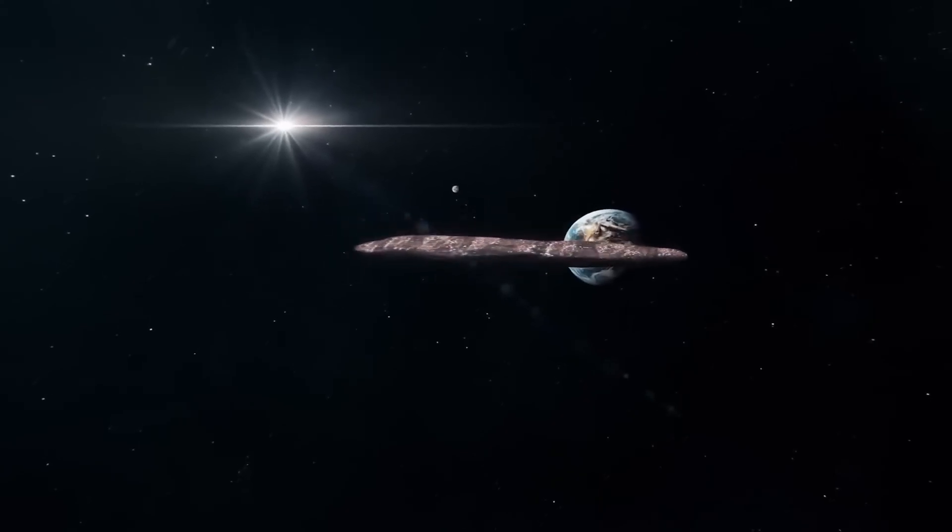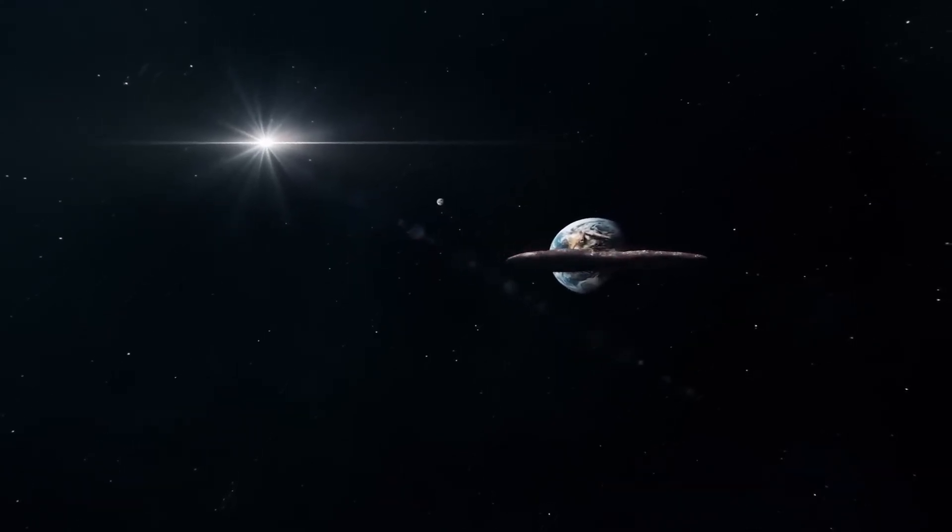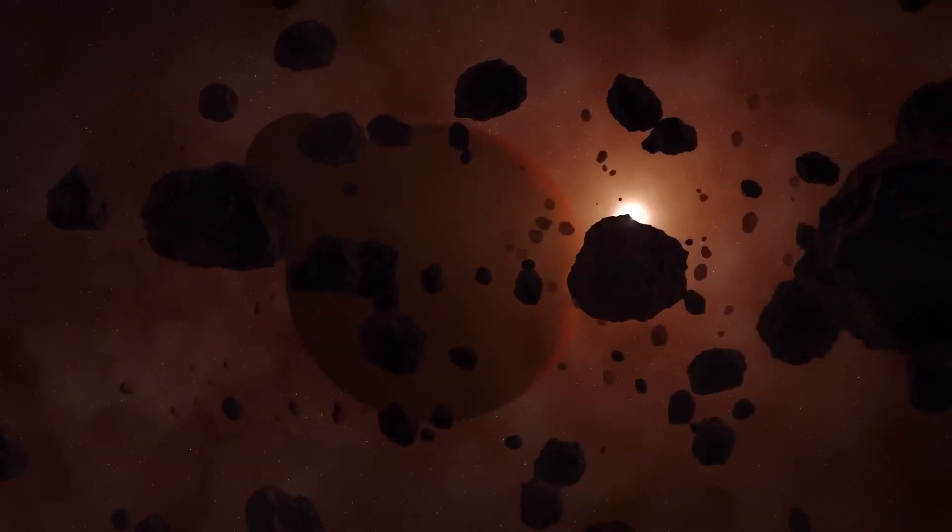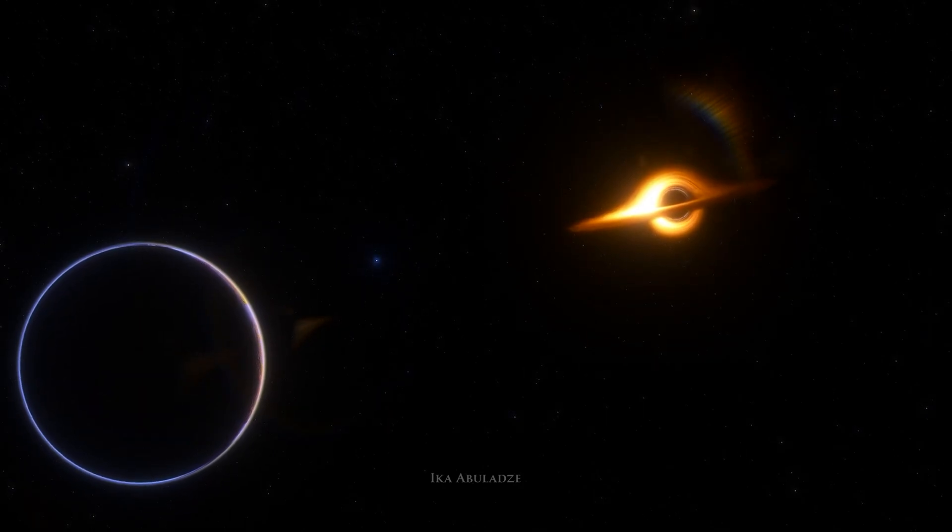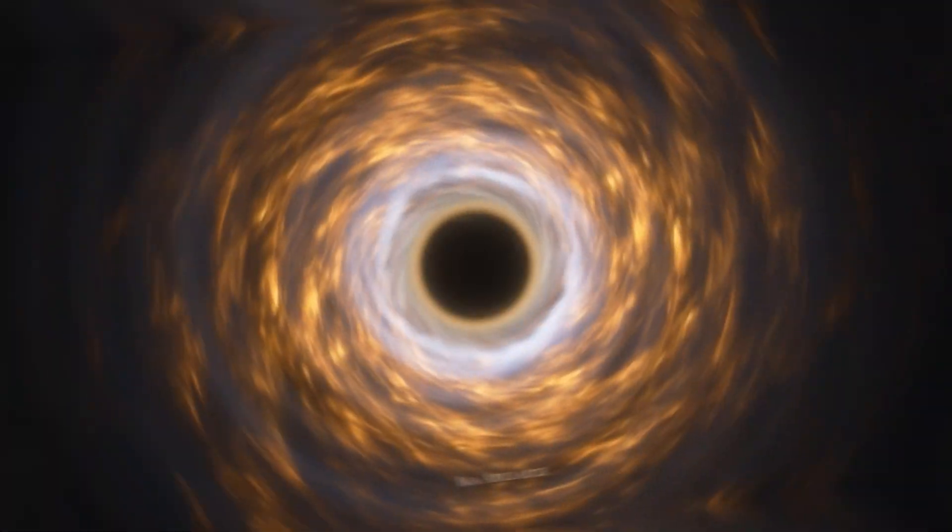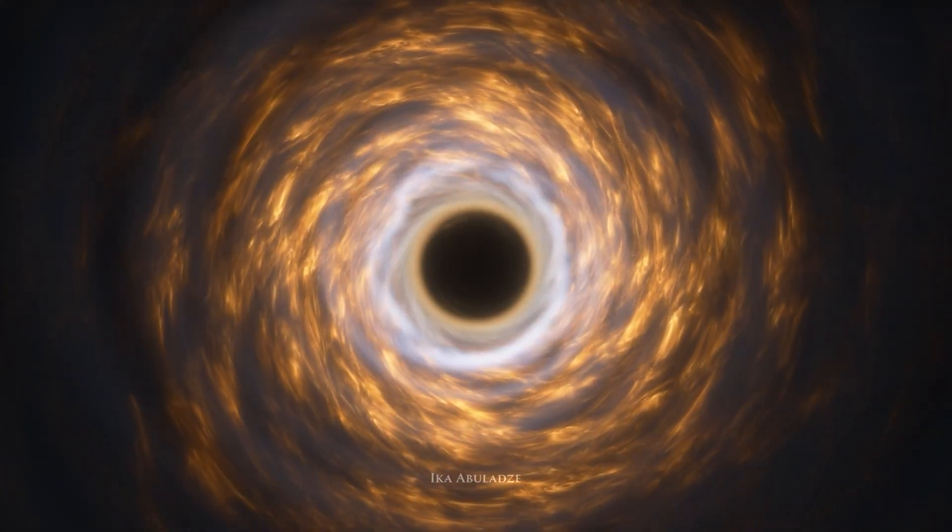One of the most recent theories suggests that Oumuamua could be a fragment of a planet destroyed by extreme gravitational forces. These forces, caused by a massive star or a nearby black hole, could have stretched and torn the planet apart, forming objects with unusual shapes.